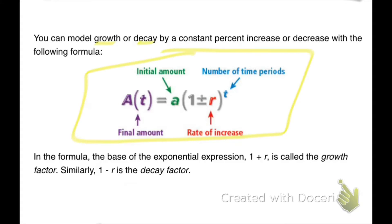So in our formula, the capital A(t), that's our final amount. That's the amount that you end up with at the end of a certain time period. Now little a here, that's our initial amount. That's what we start with.